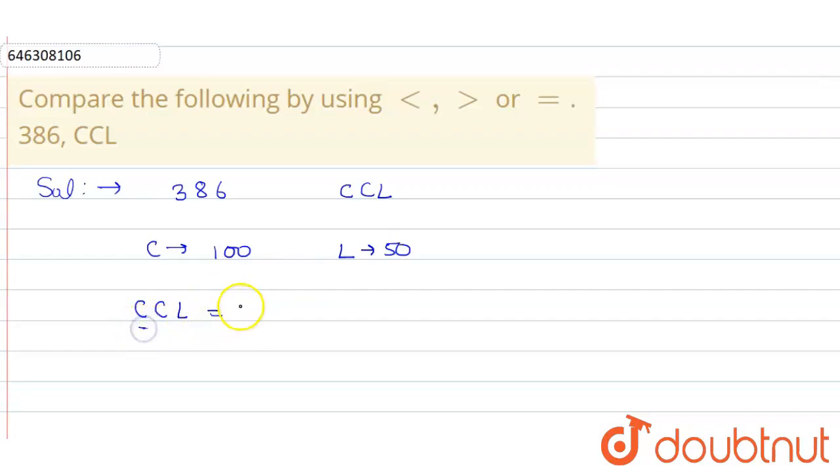First C, that is 100. Then plus, second C is 100. And L is 50. So here, my total is 250.